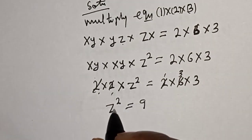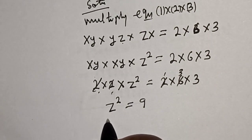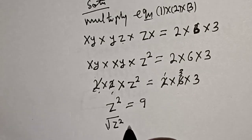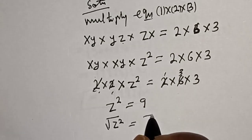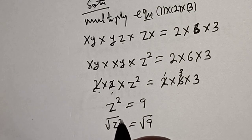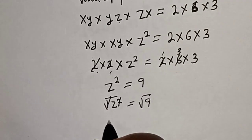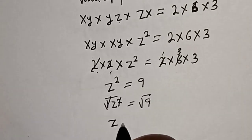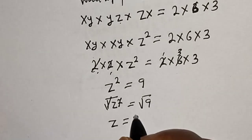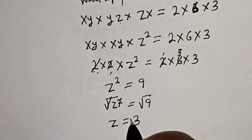Now, let's take the square root of both sides. The square root of Z² equals the square root of 9, so Z is equal to plus or minus 3.